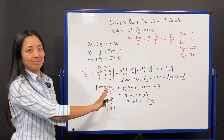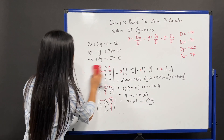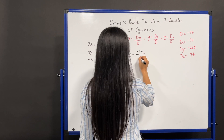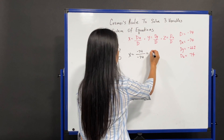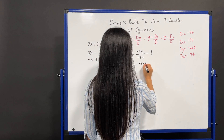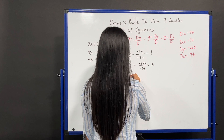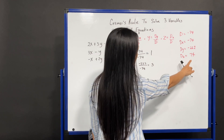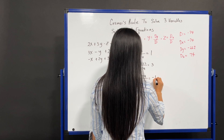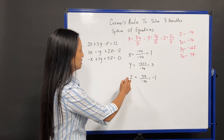All right, and we are done with all this calculating. Our last step is going to be plugging our numbers into these formulas. x is equal to D of x over D, which is negative 74 divided by negative 74, giving us 1. y is equal to D of y over D, so negative 222 divided by negative 74, giving us 3. And z is equal to D of z over D, which is 74 divided by negative 74, giving us negative 1. This is our solution: x equals 1, y equals 3, and z equals negative 1.